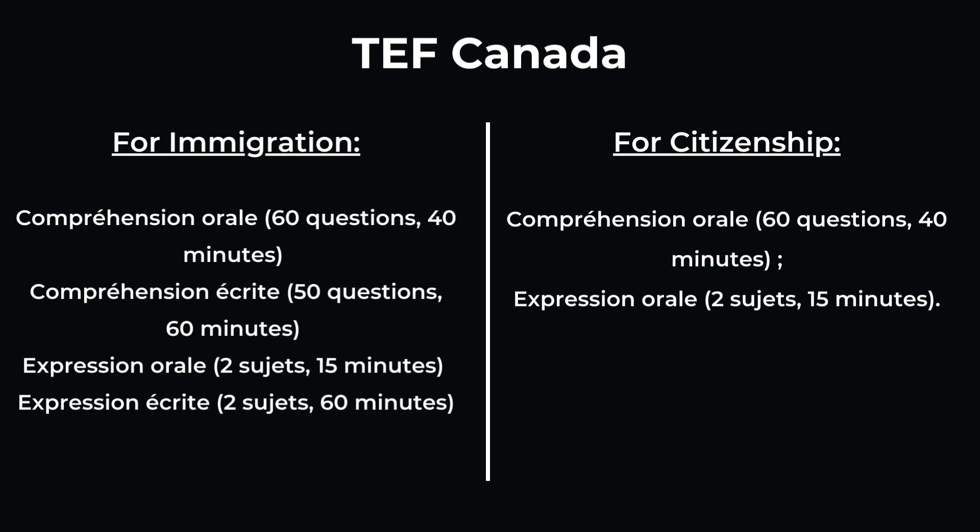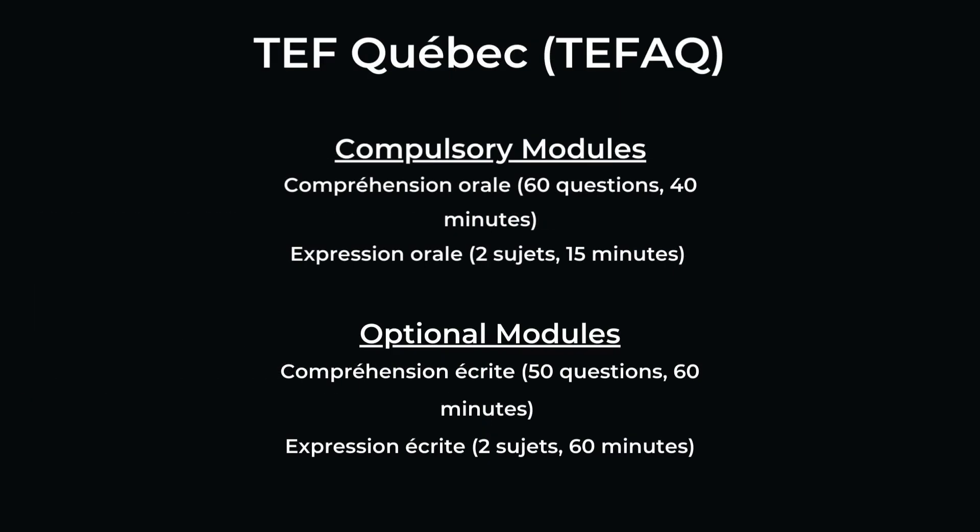TEF Canada is different for immigration and for citizenship. For immigration, you will have Compréhension Orale with 60 questions in 40 minutes, Compréhension Écrite with 50 questions in 60 minutes, Expression Orale with two topics in 15 minutes, and Expression Écrite with two topics in 60 minutes. For citizenship, it will have Compréhension Orale — 60 questions in 40 minutes — and Expression Orale with two topics in 15 minutes.